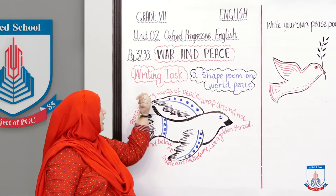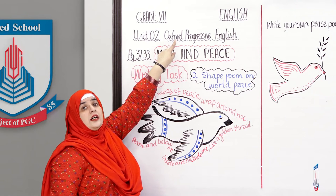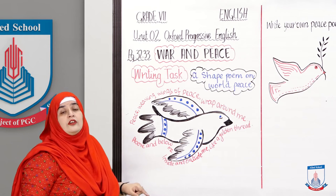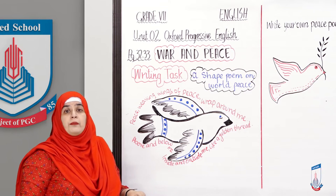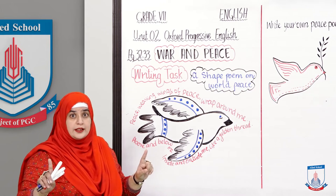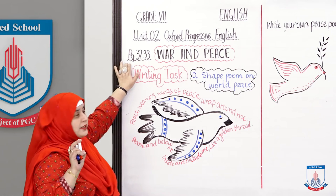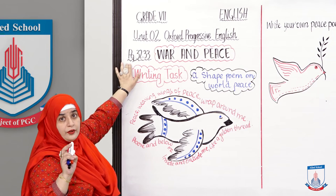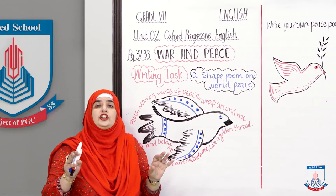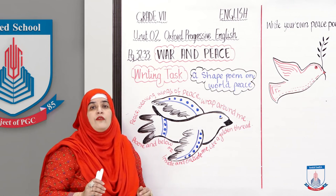Aaj aapka writing task is from Oxford Progressive English Reader, Book 7, Unit 2. Is unit ko generally kehte hain 'War and Peace,' so we are talking about peace, not wars. Yeh piece hai page number 32 se page number 33 tak. Aur ismayn aapne sirf ek shape poem likhni hai. Kaise likhni hai, let's go ahead and I'll tell you further.